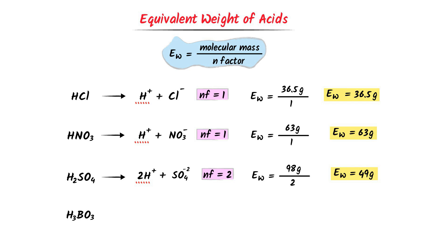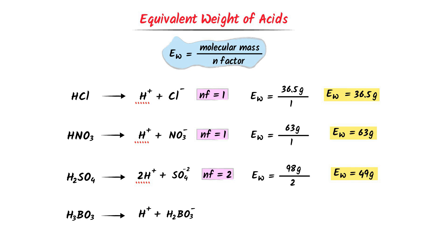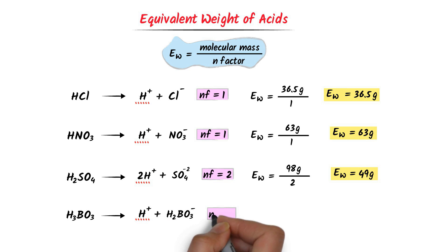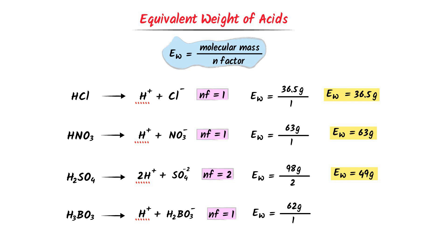In case of boric acid, it dissociates to hydrogen ion plus H2BO3. There is only 1 hydrogen ion, so its N factor is 1. Its equivalent weight is equal to the molecular weight of boric acid, which is 62 gram, upon 1. After calculation, I get 62 gram. So the equivalent weight of boric acid is 62 gram.